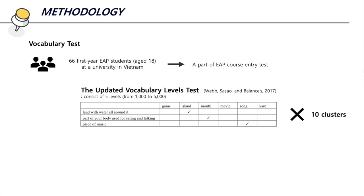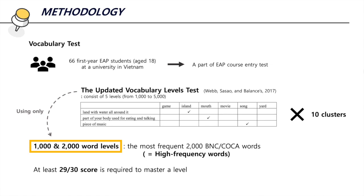In order to answer the third research question, the authors tested the vocabulary knowledge of EAP students at a university in Vietnam. The number of participants was 66, and they were first-year students aged 18 on a one-year EAP program. The updated vocabulary levels test developed by WAP, SASAL, and BALANCE was used to measure students' knowledge of high frequency words. It consists of 10 clusters, and each cluster has 6 words and 3 definitions. Students are required to match form and meaning, and must get at least 29 correct answers out of 30 to master a level. The updated vocabulary levels test originally has 5 levels, but the authors used only the first and second thousand word levels, which represent high frequency words. The remaining 3 levels, 3,000 to 5,000, represent lower frequency words.